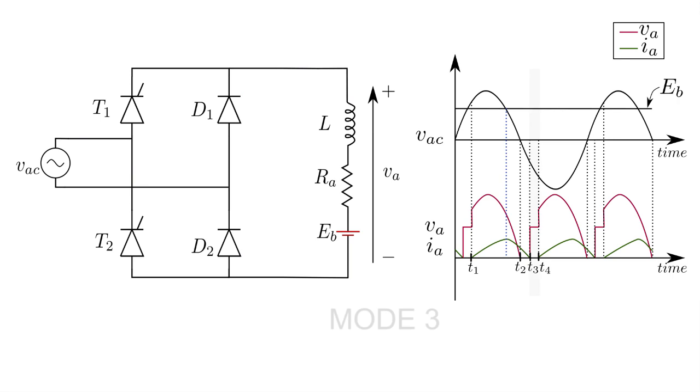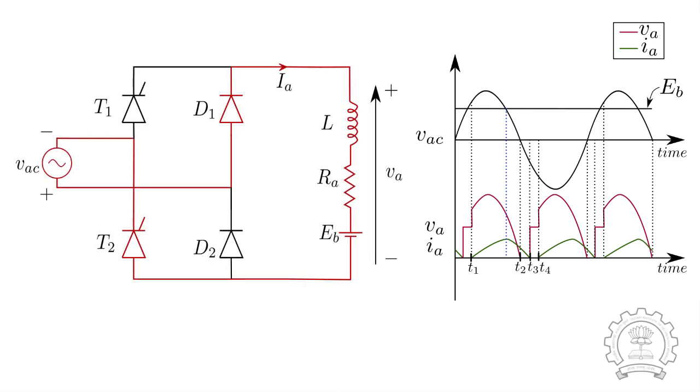Once the current becomes 0, that is at time T3, the voltage across the terminals will be the back EMF Eb. In negative half cycle, the thyristor T2 and D1 will conduct and the output voltage is minus VAC. This cycle repeats.